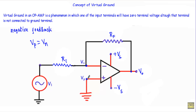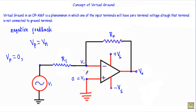Now let's say I connect this non-inverting terminal to the ground terminal, so that VP will be equal to zero due to this real ground. Our non-inverting terminal voltage VP will be equal to zero, and due to the negative feedback VP should be equal to Vn, and therefore Vn will also be equal to zero.